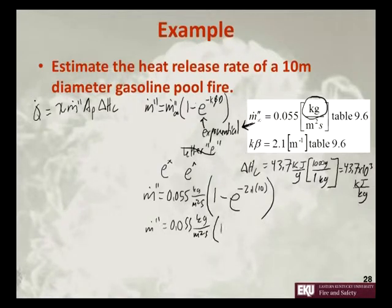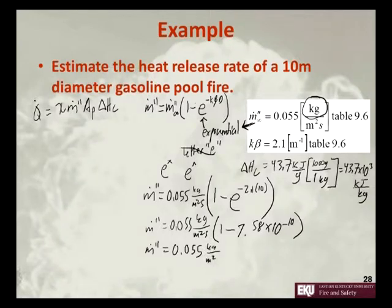So it's a really small number. That means m dot double prime is equal to 0.055 kilograms per meter squared second.